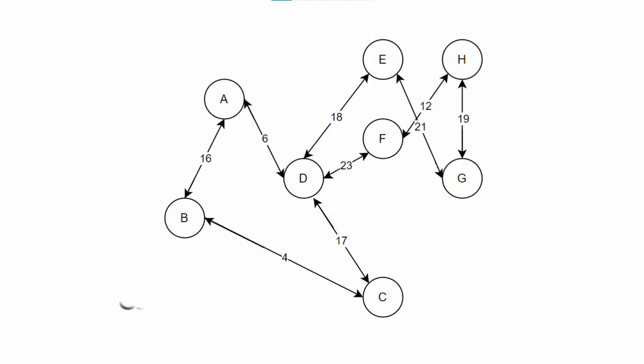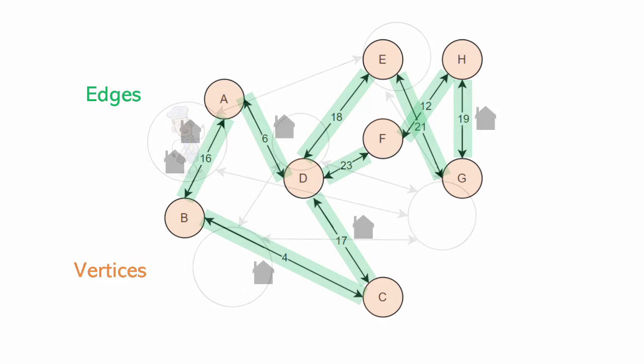In the Chinese Postman Problem, also known as the Route Inspection Problem, we want to find the most efficient path to help the tired postman. This problem can be represented with a graph that includes edges and vertices. In this case, the neighborhood would be the graph, each intersection would be a vertex, and each street would be an edge with the houses lining the streets.